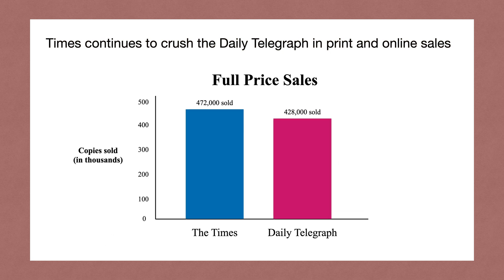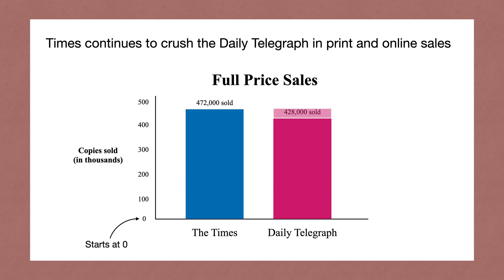If we zoom out the y-axis and start at zero — the actual bottom — we get a much more realistic look at the comparison. You can see the y-axis at the bottom starts at zero, and the comparison of the Times and Daily Telegraph is a lot closer. That gap is a lot less than doubled, giving us a much more realistic picture of what's going on.